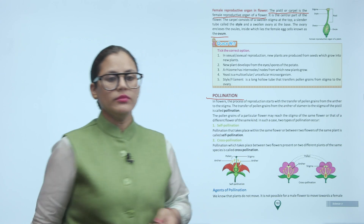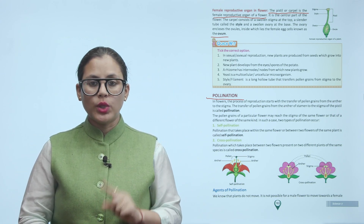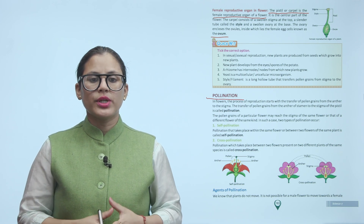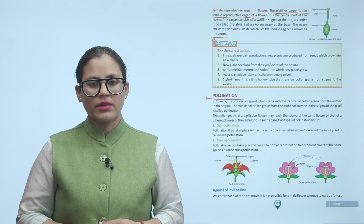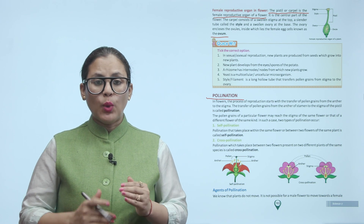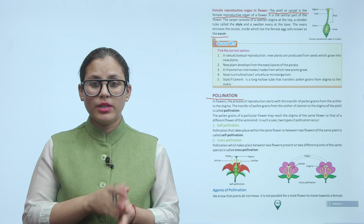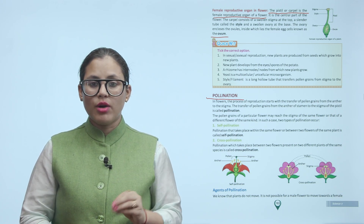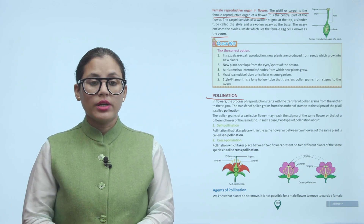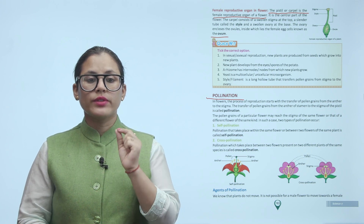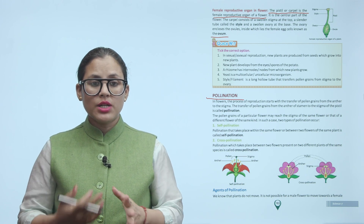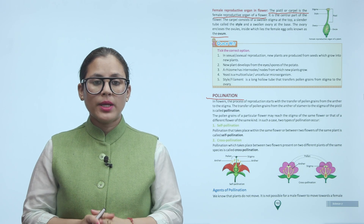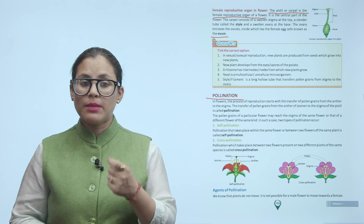Pollination: In flowers, the process of reproduction starts with the transfer of pollen grains from the anther to the stigma. The transfer of pollen grains from the anther of the stamen to the stigma of the pistil is called pollination. There are two types: self-pollination, which takes place within the same flower or between two flowers of the same plant; and cross-pollination, which takes place between two flowers on two different plants of the same species.